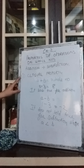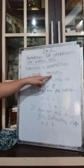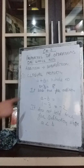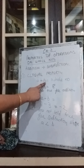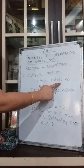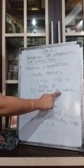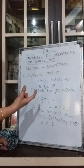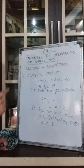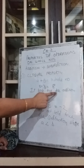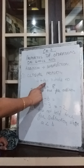The first property we come to is closure property. This property means that if A is a whole number and B is also a whole number, then if their addition gives a whole number only, that means this property holds true for addition. If two whole numbers are added and the result is also a whole number, then closure property holds true for addition.